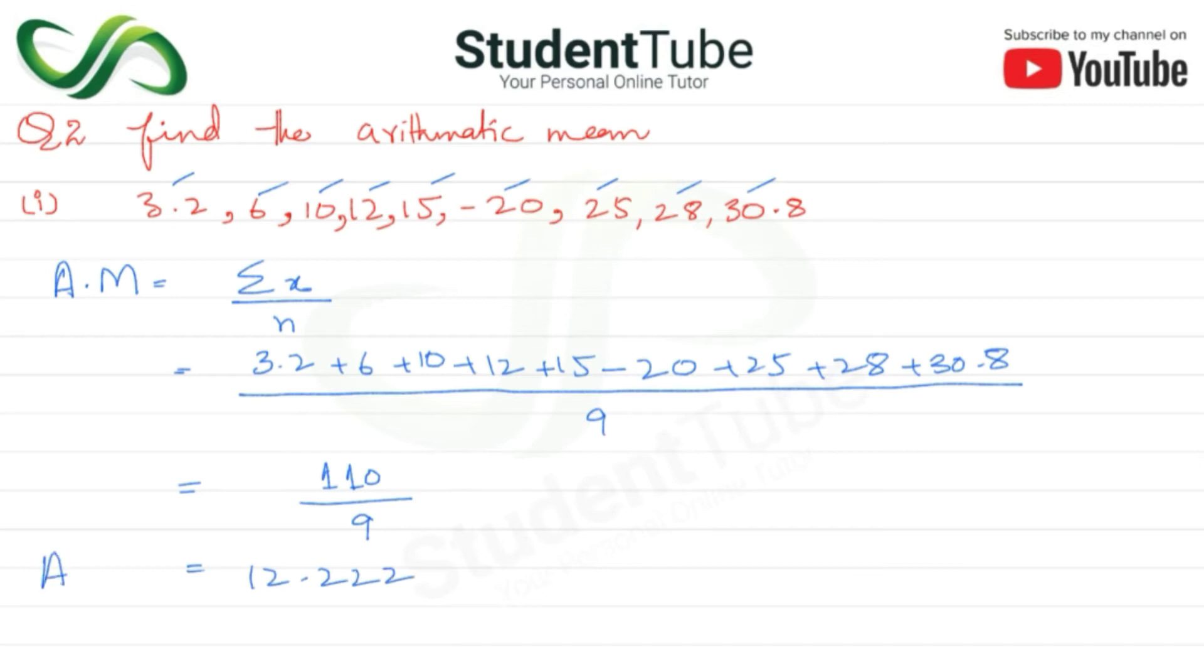So arithmetic mean, what is our answer? 12.222. It's very simple. Let's ask.